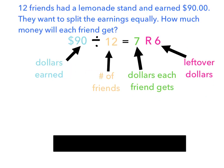Here's the last story problem. 12 friends had a lemonade stand and earned $90. They want to split the earnings equally. How much money will each friend get? So again, it is 90 divided by 12 equals 7, remainder 6 for our equation.